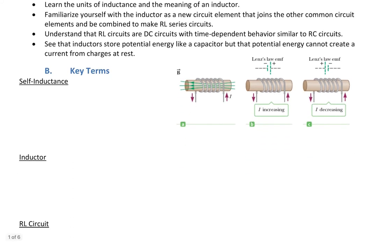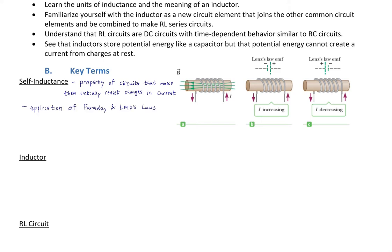We want to understand that inductors store potential energy like a capacitor, but that stored energy cannot create current from charges at rest — because a current at rest won't experience any force through a magnetic field. Let's look at our first key term: self-inductance. Self-inductance is a property of circuits that makes them initially resist changes in current. It's an application of Faraday and Lenz's law, so refer to Lecture 11 for those.